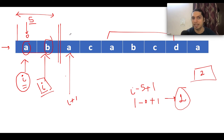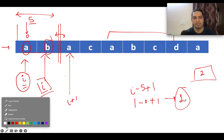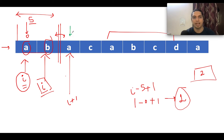Since we saw a breakage condition — the string is becoming discontinuous — we reset the s pointer. The s pointer gets reset to the current position, and i also points here, giving us a fresh start.